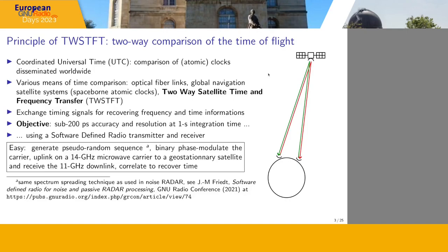When we were asked in Besançon, what we were asked was to make a software-defined radio transceiver — and I translated this request as an open-source, open-hardware software-defined radio transceiver for two-way satellite time and frequency transfer. That looked easy enough. We knew very well how to generate a pseudorandom sequence, having discussed at GRCON 2021 how to make a noisy radar. When you want to measure time of flight, a radar measurement is the same: you want to know the range to a target. We knew how to do a pseudorandom sequence, how to binary phase shift key modulate a signal, and how to broadcast.